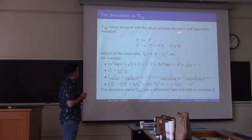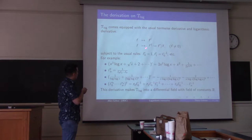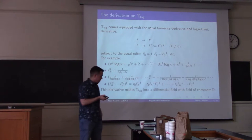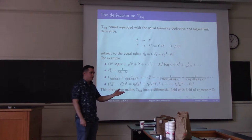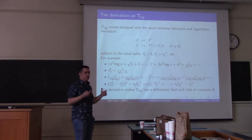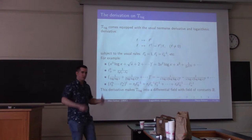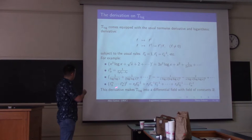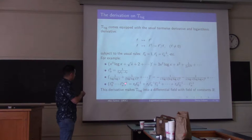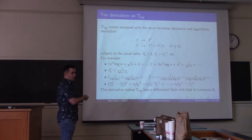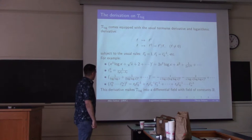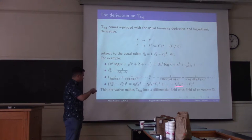In addition to the derivative, we have the logarithmic derivative, which I call the dagger — f† = f'/f. For what we do, we like to treat both the derivative and the logarithmic derivative on equal footing; they're of equal importance. As an example for later: take an arbitrary monomial; its dagger is an expression where we have minus ones in the exponents. Nothing else can occur as the logarithmic derivative of one of these monomials — it always takes this form.